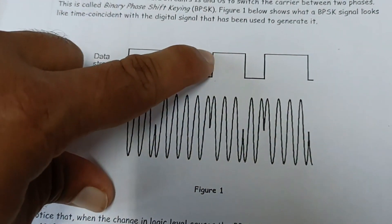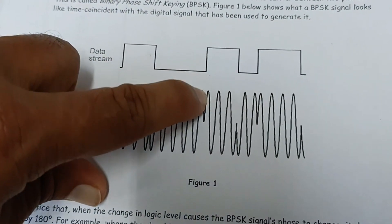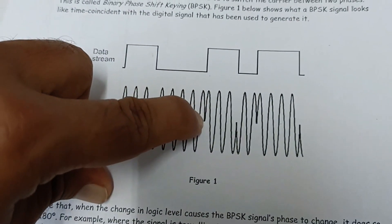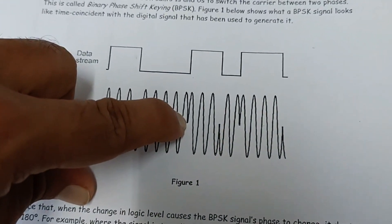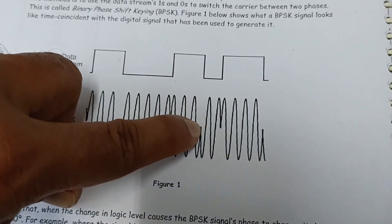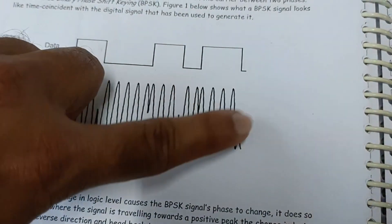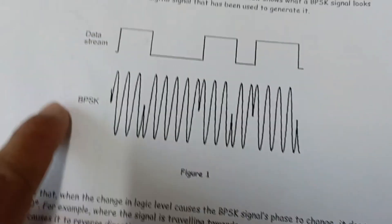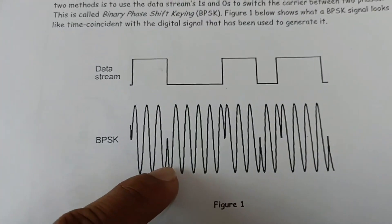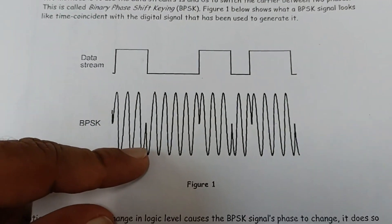At each edge — this edge, and this edge — there is a 180-degree phase shift change, and similarly at each transition point. This is the BPSK modulated signal which we have to generate from the hardware kit.